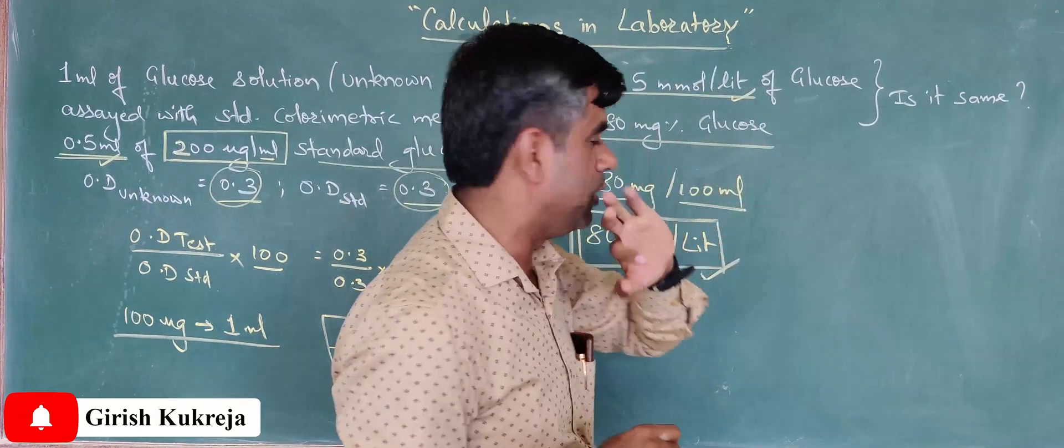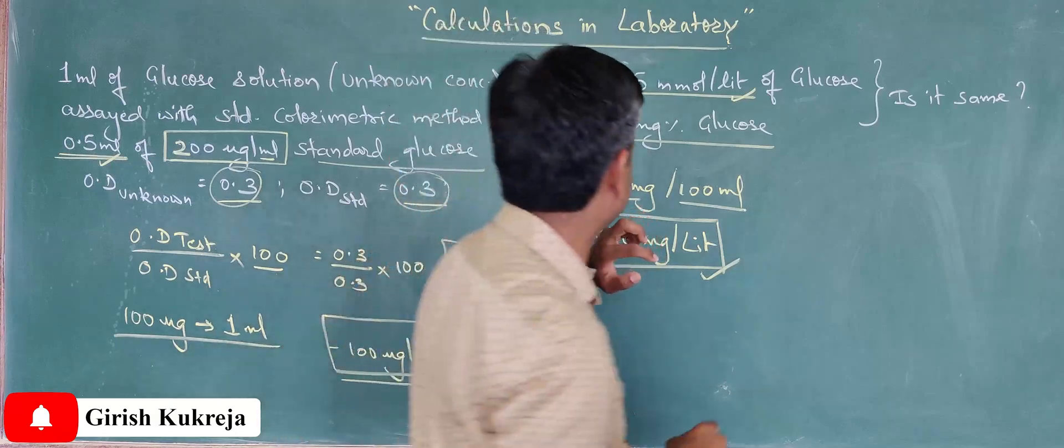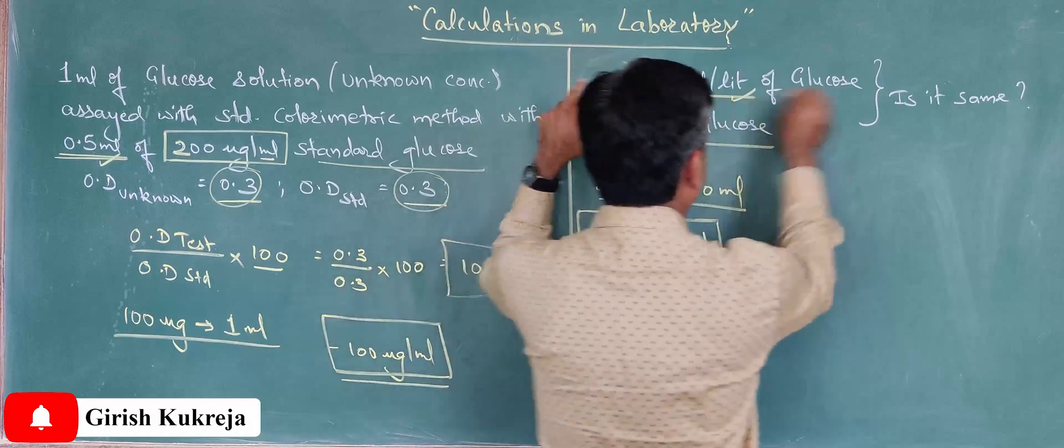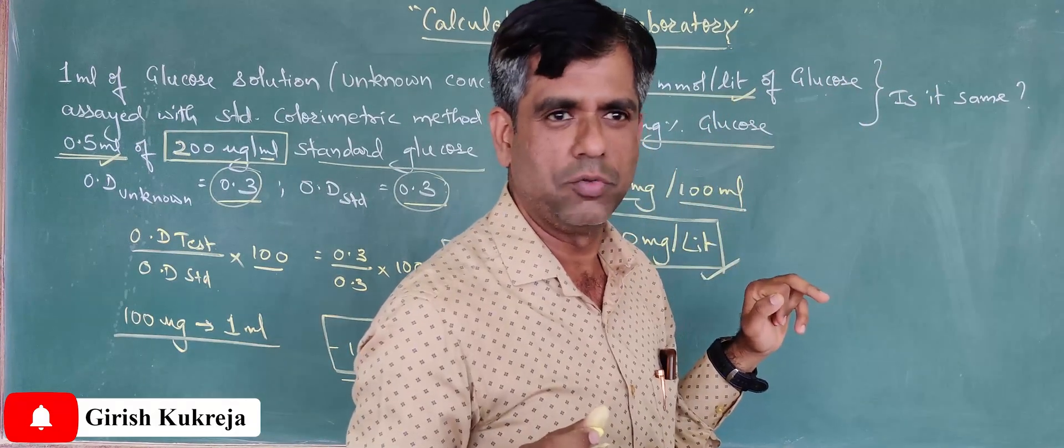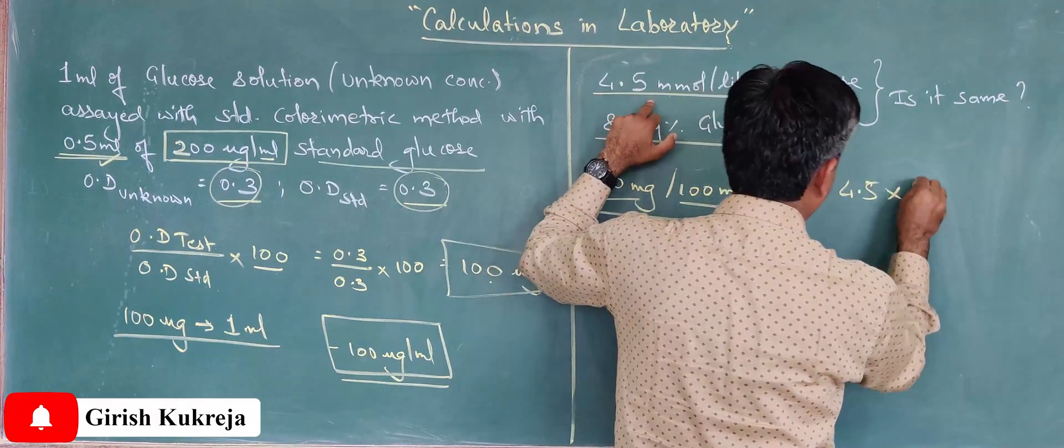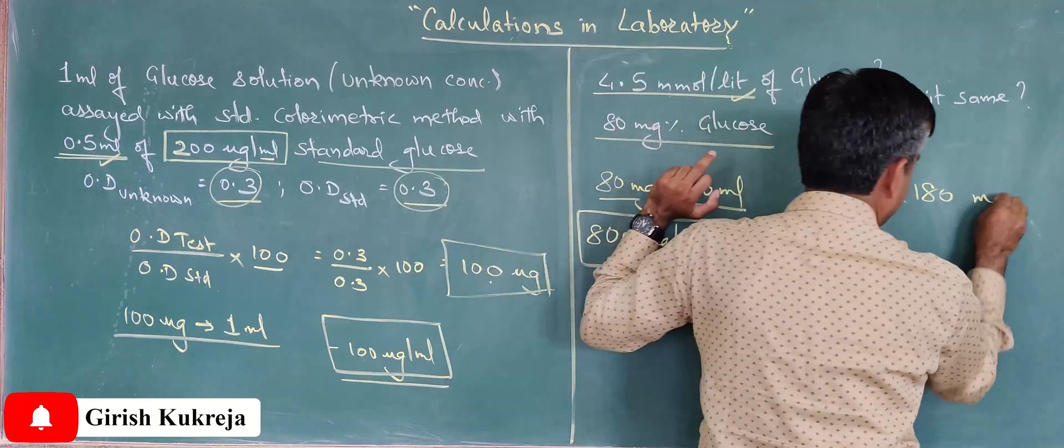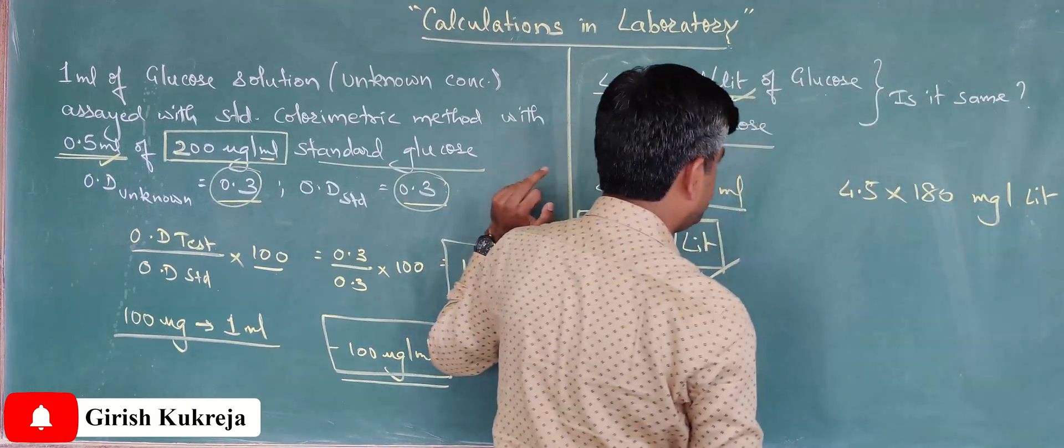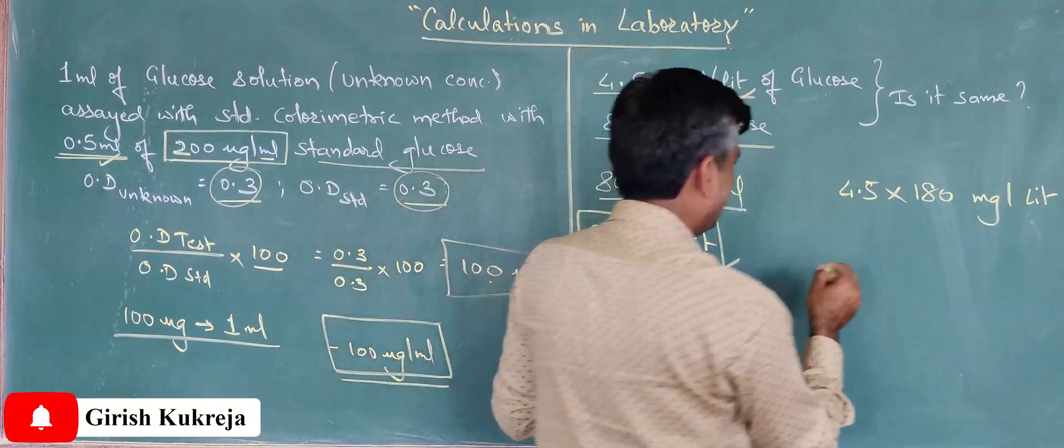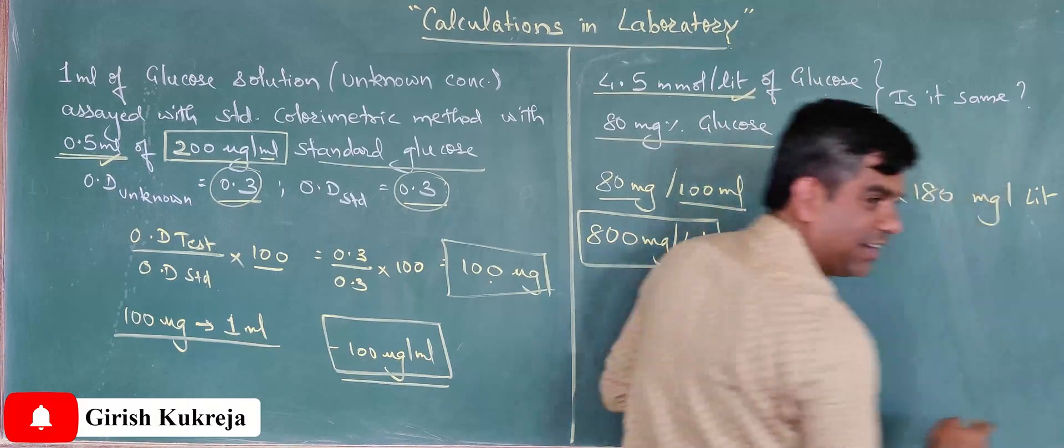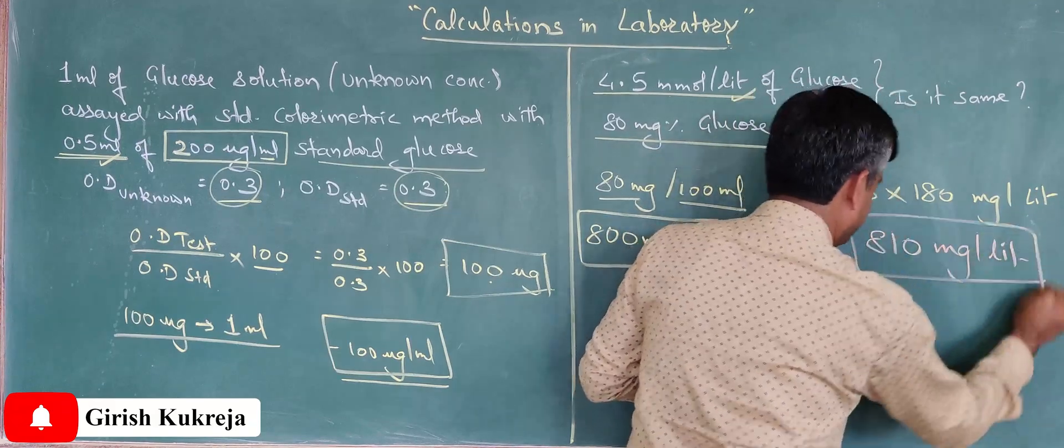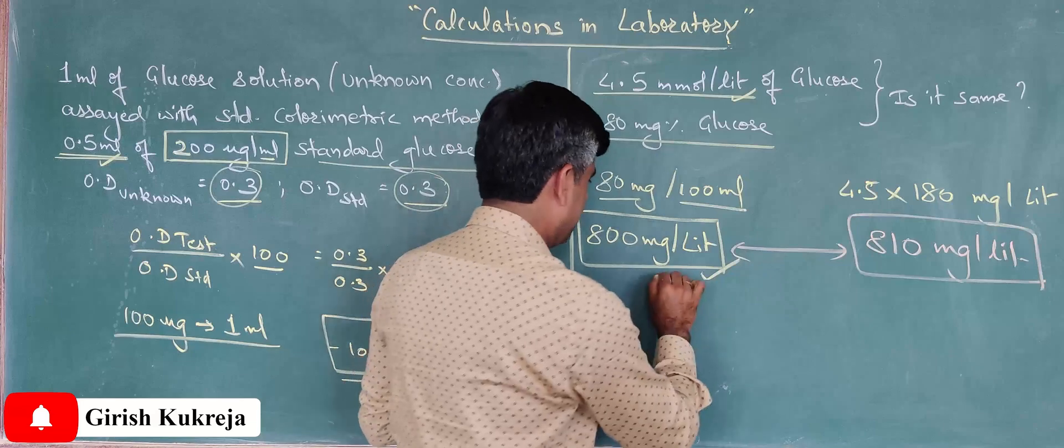Here the other one reported 4.5 millimoles per liter. Let us convert into grams—millimoles, let's keep it in milligrams because I already have milligram here. So molecular weight of glucose, you all know, is 180. So it is around 4.5 multiplied by 180 milligrams in a liter. This comes to be something around—please do this for me—somewhere around, I did it earlier, so this comes to around 810 milligrams per liter, close enough.